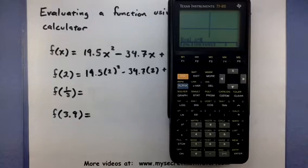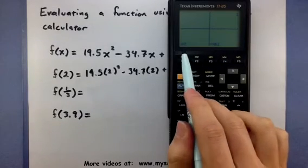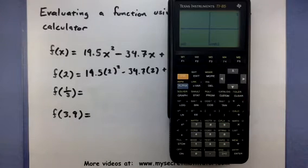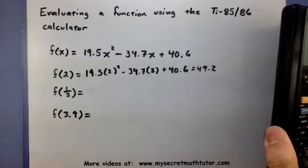Okay, so it wants to know the input we want to feed into this function. Let's go ahead and try that 2 one more time. So x equals 2. Press enter. And sure enough, down at the bottom it displays it. And it says, okay, when you use x equals 2, your output was 49.2. Which, if we double check, sure enough, that's exactly what we got last time.